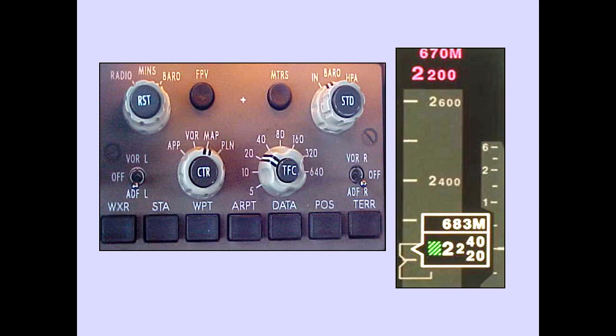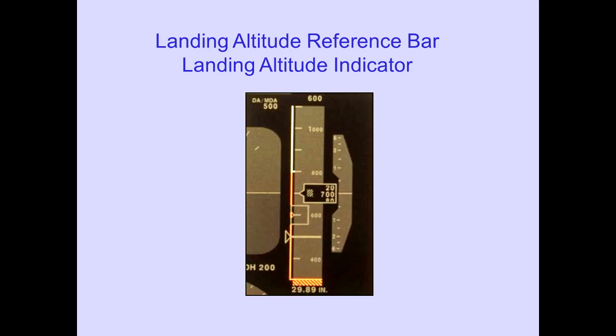Selecting meters displays current and selected altitude in meters, while the altitude in feet remains displayed. The landing altitude reference bar displays a white bar from 1,000 feet to 500 feet above landing altitude, and an amber bar from 500 feet above to landing altitude. The landing altitude indicator displays an amber hatch mark at the landing altitude.